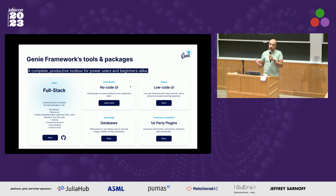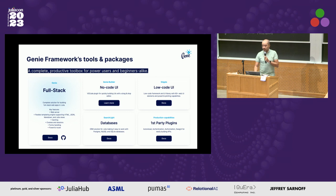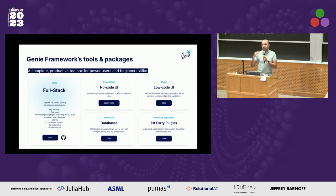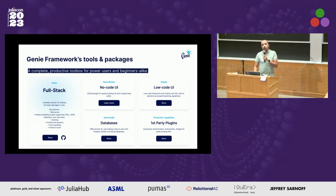The Gini framework is a complete toolset with which you can build anything from web services, REST APIs, and interactive dashboards, all in pure Julia. The framework includes many packages: the Gini.jl package, which is the most famous one and implements everything to do with the server and backend routing; a reactive UI builder toolbox called Stipple; an ORM to connect to databases; and first-party plugins that provide features such as authentication. On top of that, we have Gini Builder and Gini Cloud, which are no-code tools for enhanced productivity.